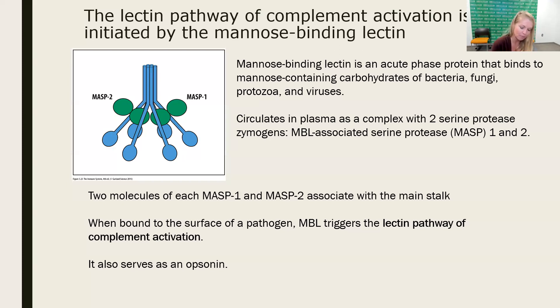Mannose-binding lectin, produced by the liver during infection as an acute phase protein, circulates in the plasma with two serine protease zymogens called MASP1 and MASP2. MASP stands for mannose-binding lectin associated serine protease. It kind of looks like a stalk of flowers that's upside down. Each of the MASP1 and MASP2 are associated with the main stalk.